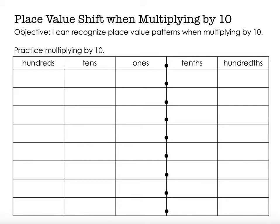In a previous video we used place value disks to help us visualize and see the actual quantities. Today we're just going to use digits, like this: 4. Before, with the place value disks, I ended up with 4 groups of 10 that I then bundled up and made into 4 tens instead of 40 ones.